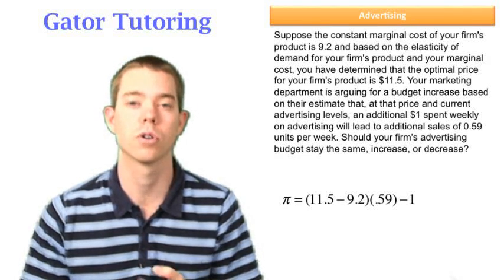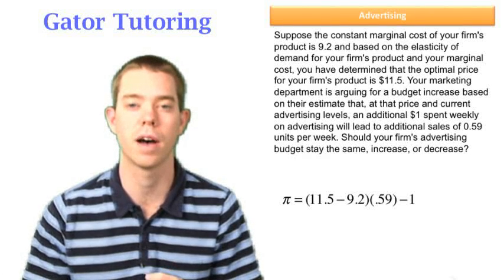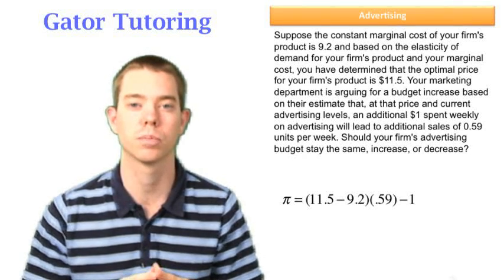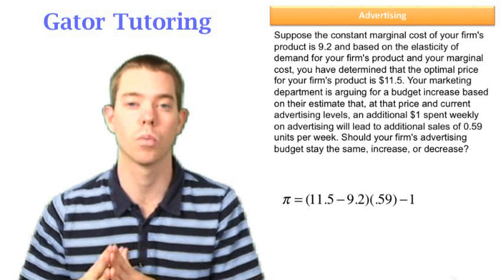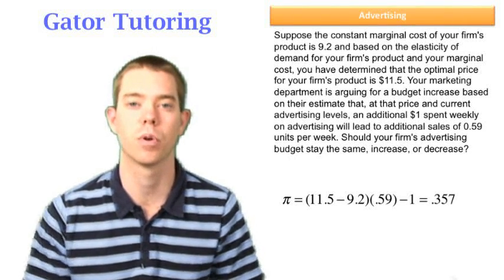Price is 11.5, marginal cost is 9.2, and the increase in quantity in this case is 0.59. All of that multiplied together minus our $1 cost of advertising. That's a positive number, 0.357.